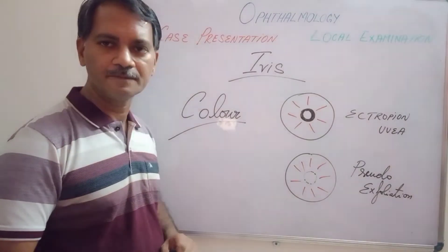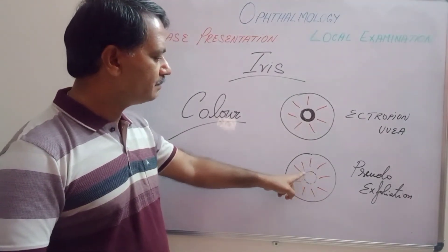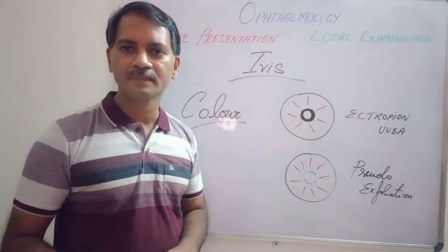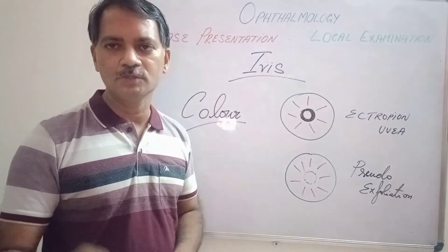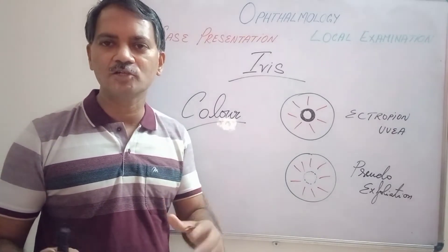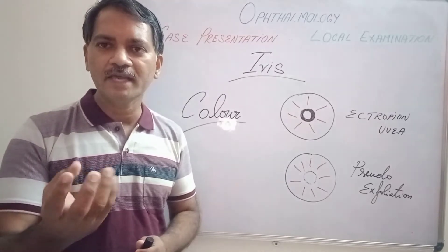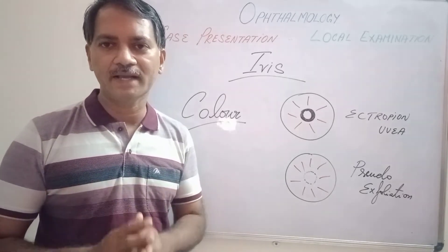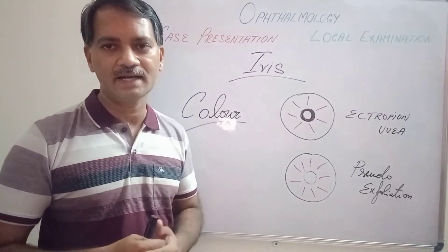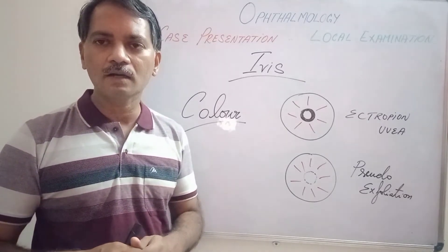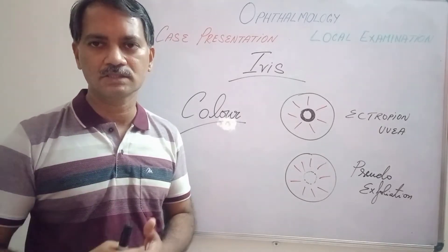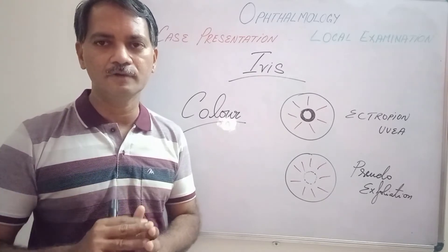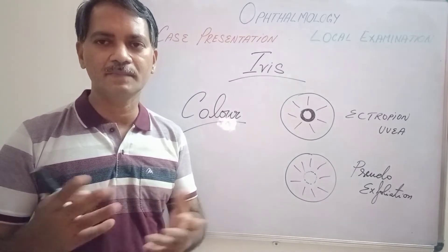The next term is pseudo-exfoliation. In this picture, the pupillary margin of the iris is not clear — it is not well defined. You can see white deposits along the pupillary margin that look like dandruff-like material. This is what we call pseudo-exfoliation, which is a degeneration of the iris tissue leading to dandruff-like material formation. This is very important because it may affect the outcome of cataract surgery, and people having pseudo-exfoliation are prone for pseudo-exfoliative glaucoma.